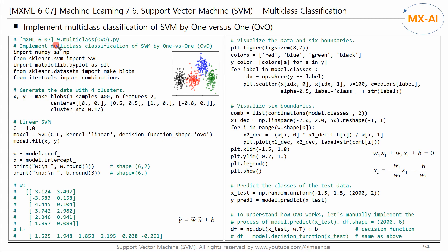Next, let's implement multi-class classification of SVM using the OVO method. We will use scikit-learn's SVC. The data we will use has four classes, as in the previous example. We create a SVC model with the kernel argument set to linear. You can also create a non-linear SVM model using RBF or polynomial kernel. Here we use linear to visually see the linear decision boundary, and set the decision function shape argument to OVO. We then fit this model to the training data. Since the number of classes is 4, the number of boundaries will be 6.